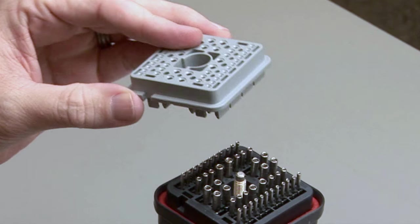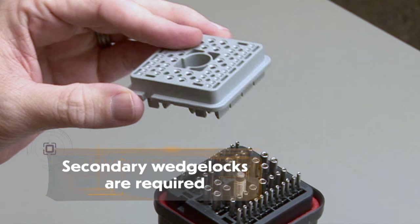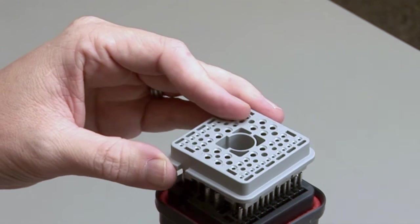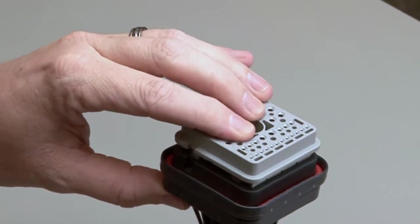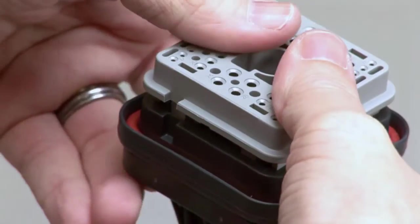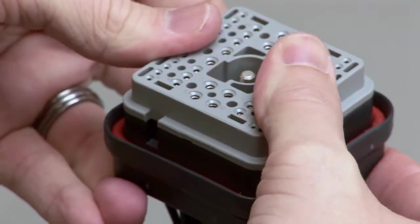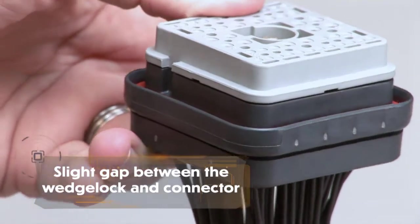When populating a DRB Series connector, secondary wedge locks are required. Wedge locks ensure proper alignment of the contacts. Insert the wedge lock by lining up the keyway. Wedge locks should be pressed firmly in place with only a slight gap showing between the wedge lock and connector.